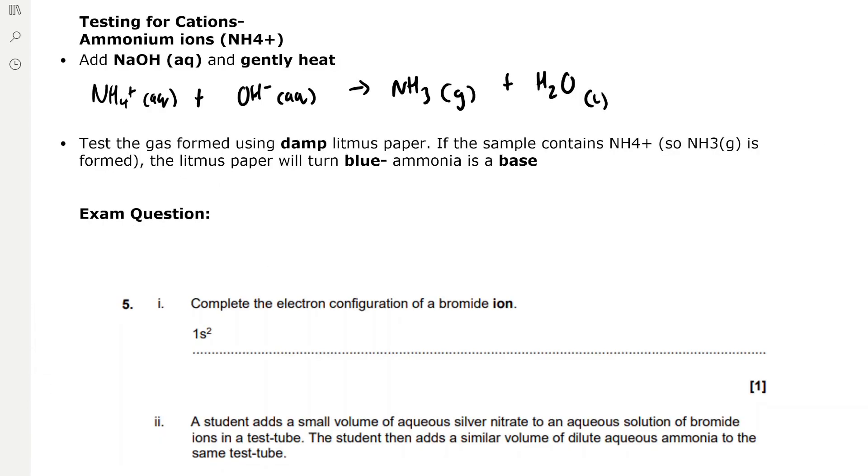Testing for cations. Later in the specification we talk about testing for transition metals. But for the moment the only cation that we need to know about is ammonium ions, NH4 plus. We can test for these by adding aqueous sodium hydroxide and heating gently. Hydroxide ions added to ammonium ions form ammonia gas and H2O liquid.